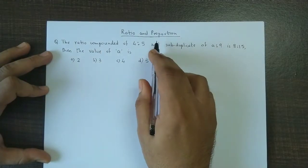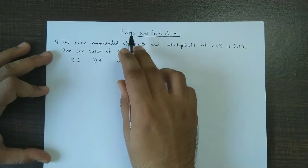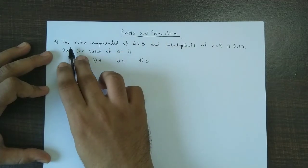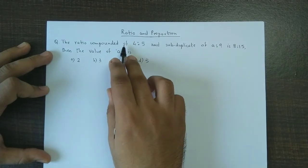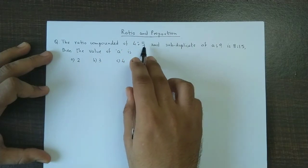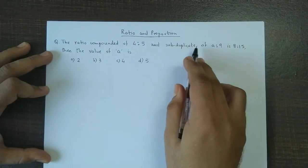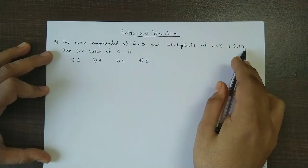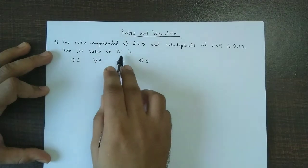Hello and welcome back. We now discuss an example from ratio and proportion. The question is: the ratio compounded of 4:5 and subduplicate of a:9 is 8:15. Find the value of a.